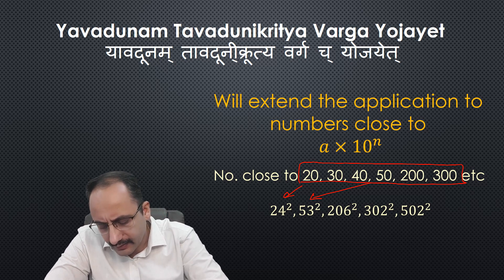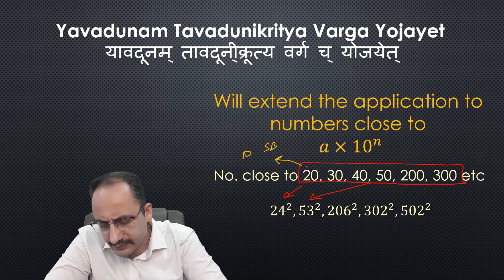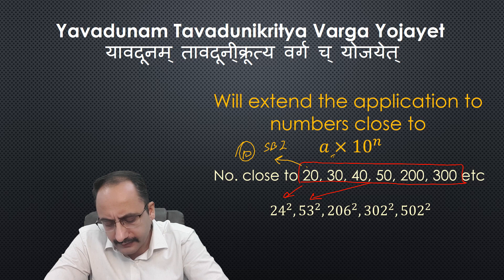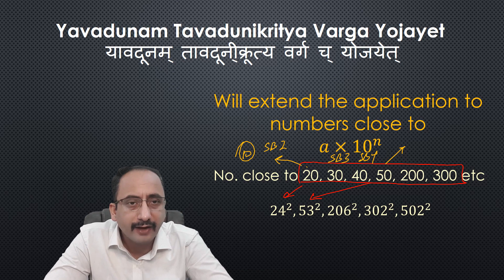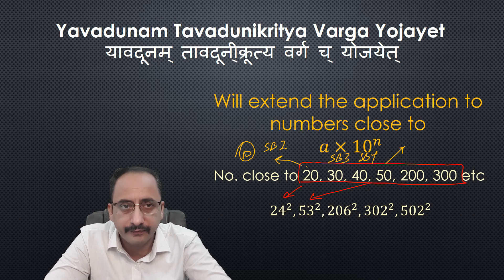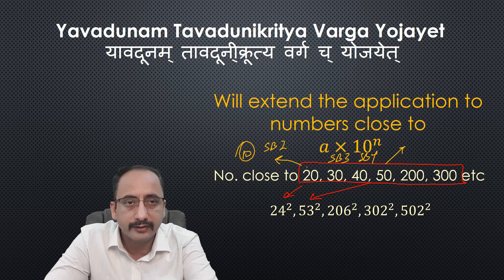What is the meaning of sub base? In the case of 20, the base is 10 — base is always a power of 10. The sub base is 2 in this case. Sub base is obtained by dividing the number by the base. So sub base is 2. In the second case sub base is 3, in the case of 40 sub base is 4. In the case of 50, if I take 10 as base the sub base is 5, but if I take 100 as base the sub base will be half. I recommend taking 100 as base and half as sub base for numbers close to 50. Now let's move forward and start with a few problems.